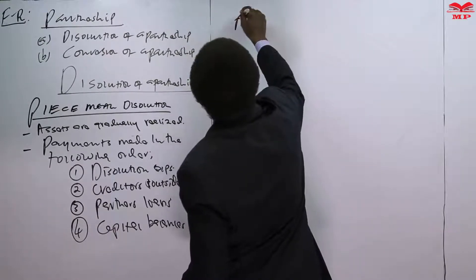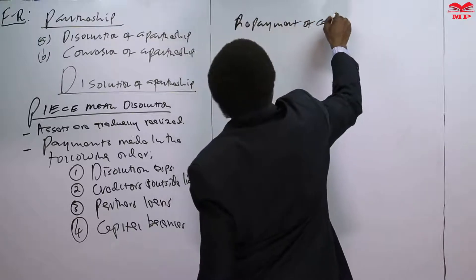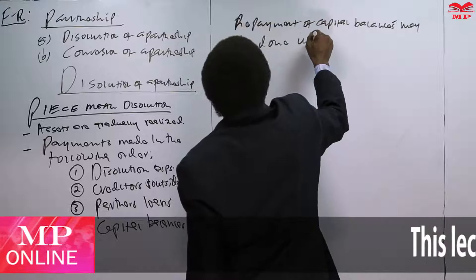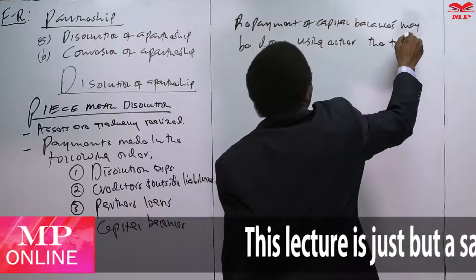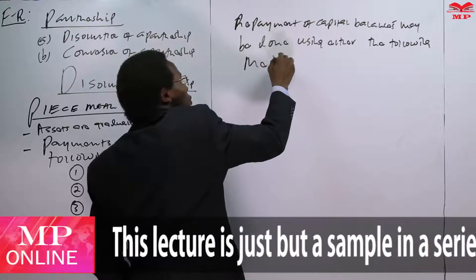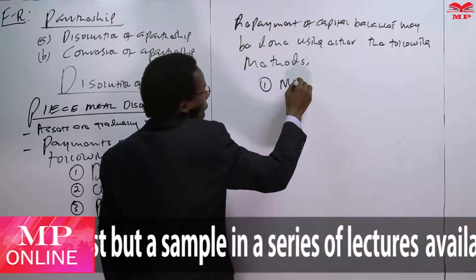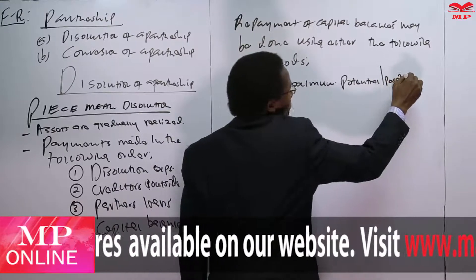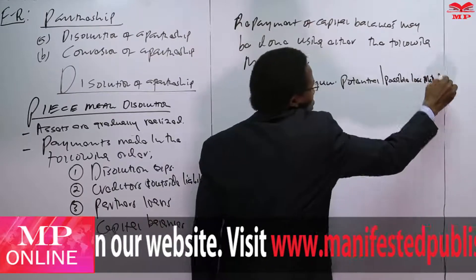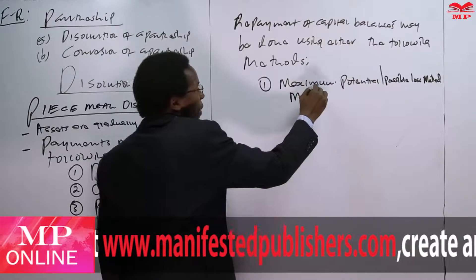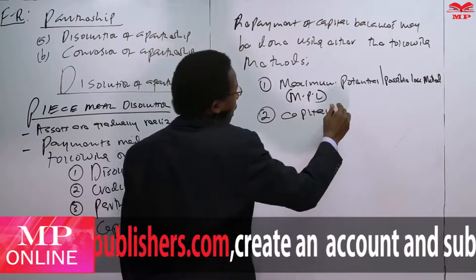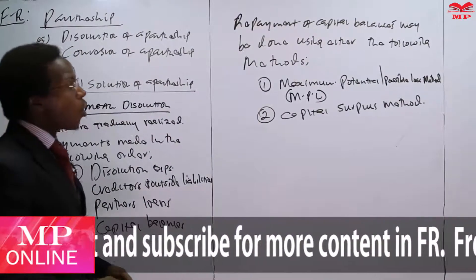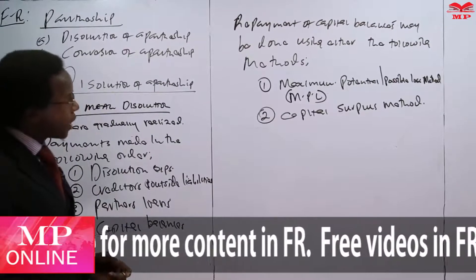Repayment of capital balances may be done using either of the following methods. One is the maximum potential or possible loss method, what we normally refer to as MPL. Two is the capital surplus method. So you can either use the maximum potential or possible loss method or the capital surplus method in determining the cash to be distributed to the partners as their capital balances.